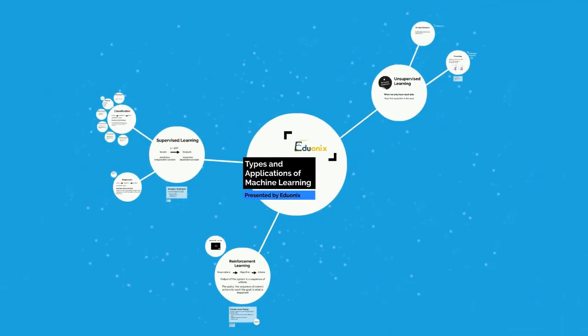That concludes our second video on the types and applications of machine learning algorithms. To summarize: supervised learning has inputs and outputs — classification algorithms have a qualitative output, and regression algorithms have a quantitative output. In unsupervised learning, we have no labeled data, only input data, and we look for natural groupings or clusters to use for purposes like targeted advertising. Finally, reinforcement learning — sometimes called semi-supervised learning — generates a sequence of actions to reach a goal state. Our next video will be on the differences between artificial intelligence and machine learning, their similarities, where there's overlap, and where there are misunderstandings.